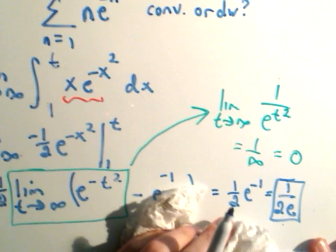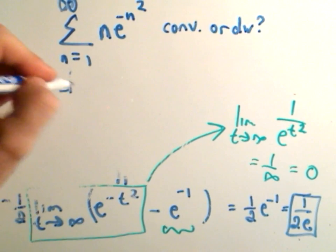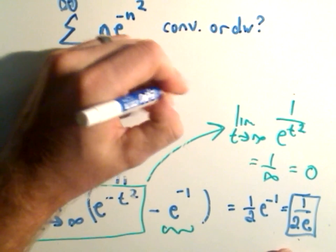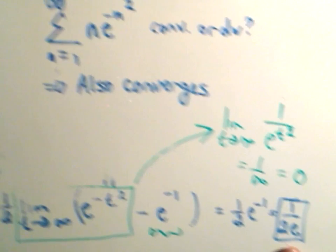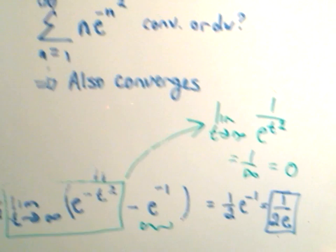And since we know now that the integral converges, by everything that we've shown, we can justify that this series also converges. Don't make the mistake, though, and say that this series converges to 1 over 2e, the value that we found, because that's not correct at all. Okay, that's definitely not true. But we can say if the improper integral is convergent, so also is the original series.